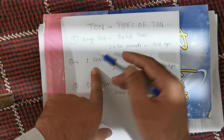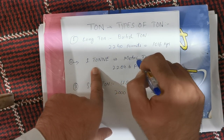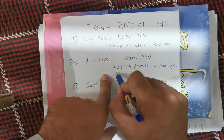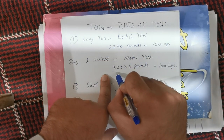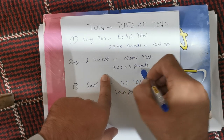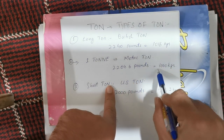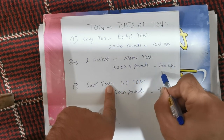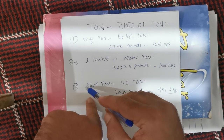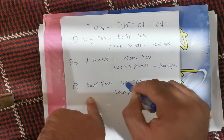The second one is generally called TUN, and also called Metric TUN — these two are the same thing. Its value in pounds is 2204.6 pounds, and if we convert it to kilograms it comes out to be 1000 kg.